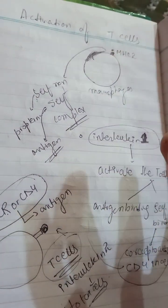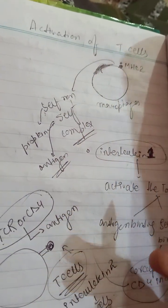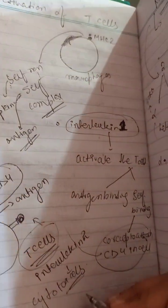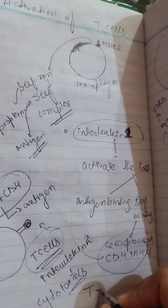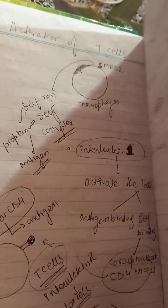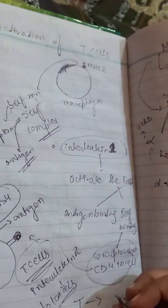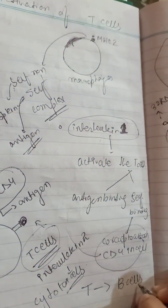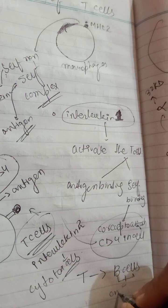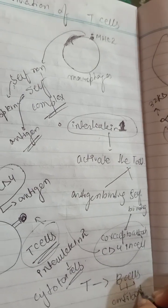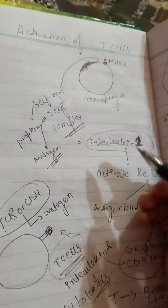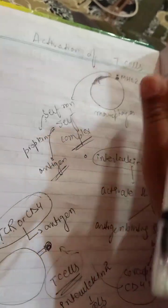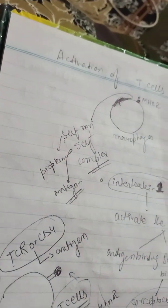T cells will also activate B cells. B cells are the B lymphocytes that will make antibodies. This is how the T cells activate and then activate the B cells to make the antibody of that antigen.